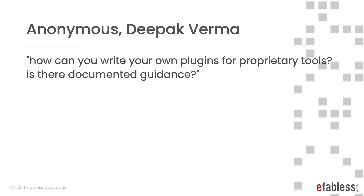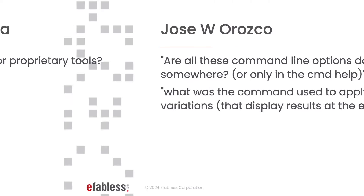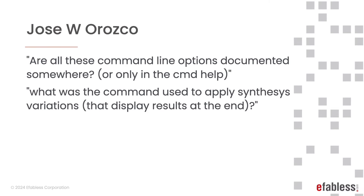How can you write your own plugins for proprietary tools? Is there documented guidance? We're working on documentation for that, which should be at least partially available starting 2.1.0. All command line options are documented in the OpenLane 2 documentation, and the command to apply synthesis variations is simply adding --flow SynthesisExploration (no space between synthesis and exploration).